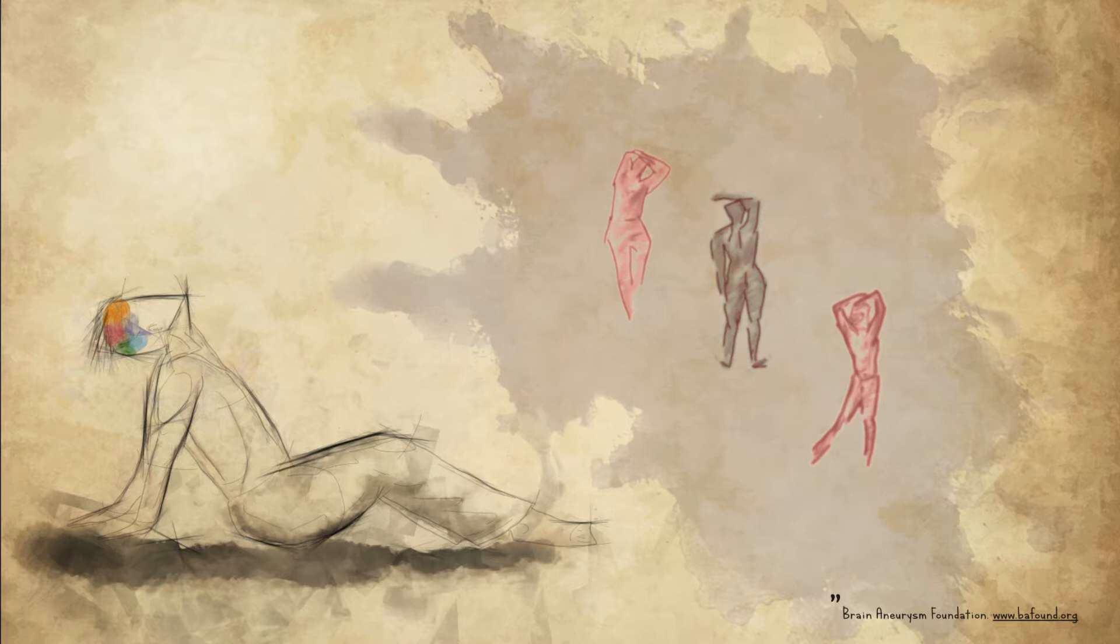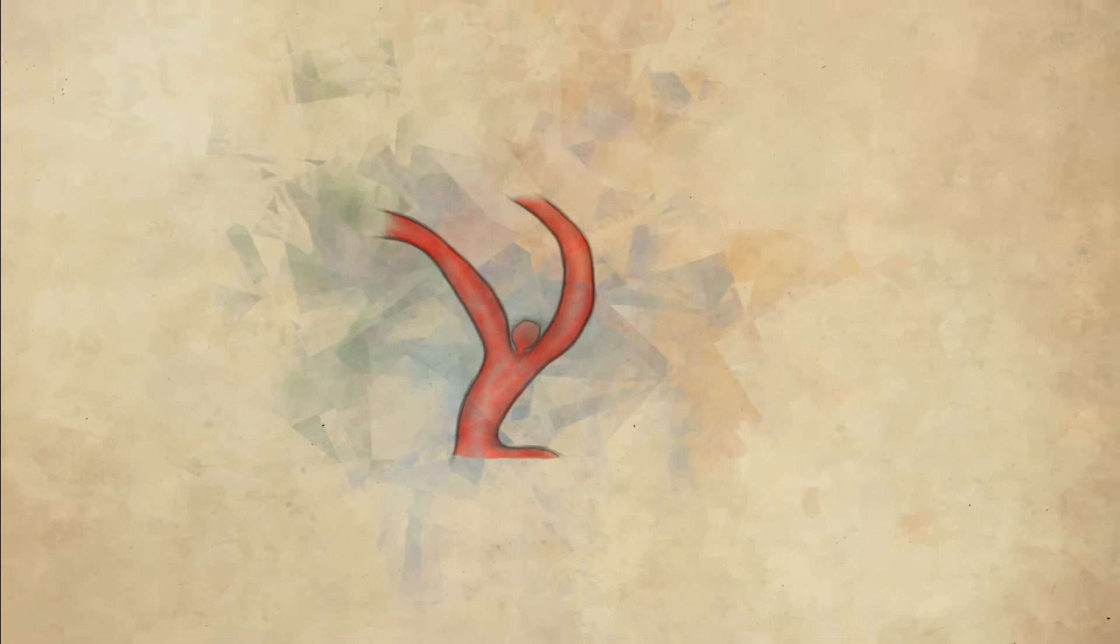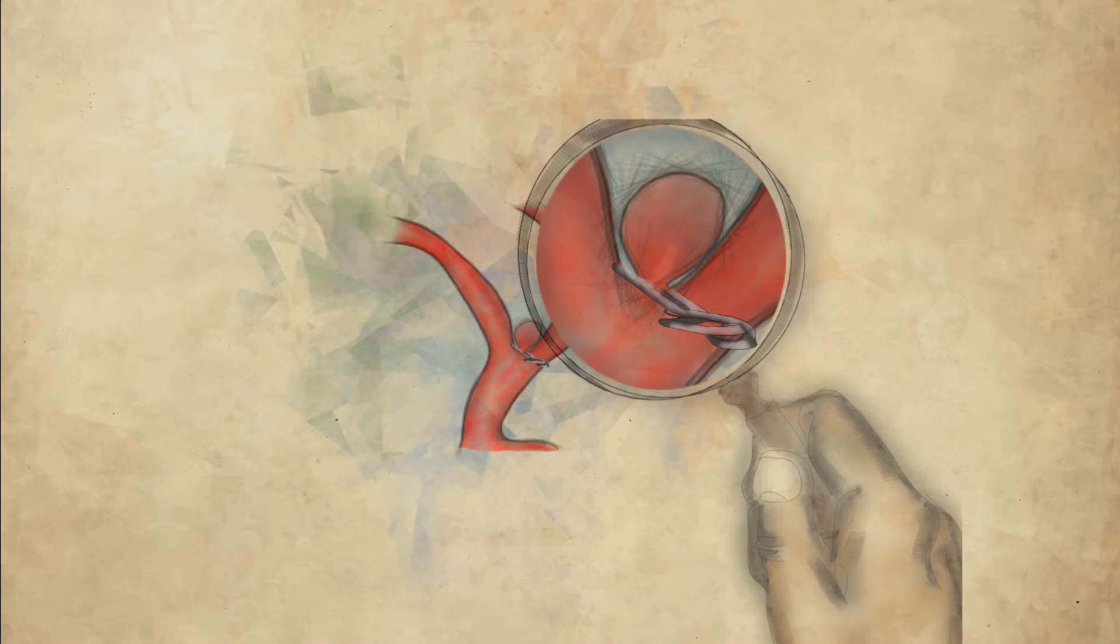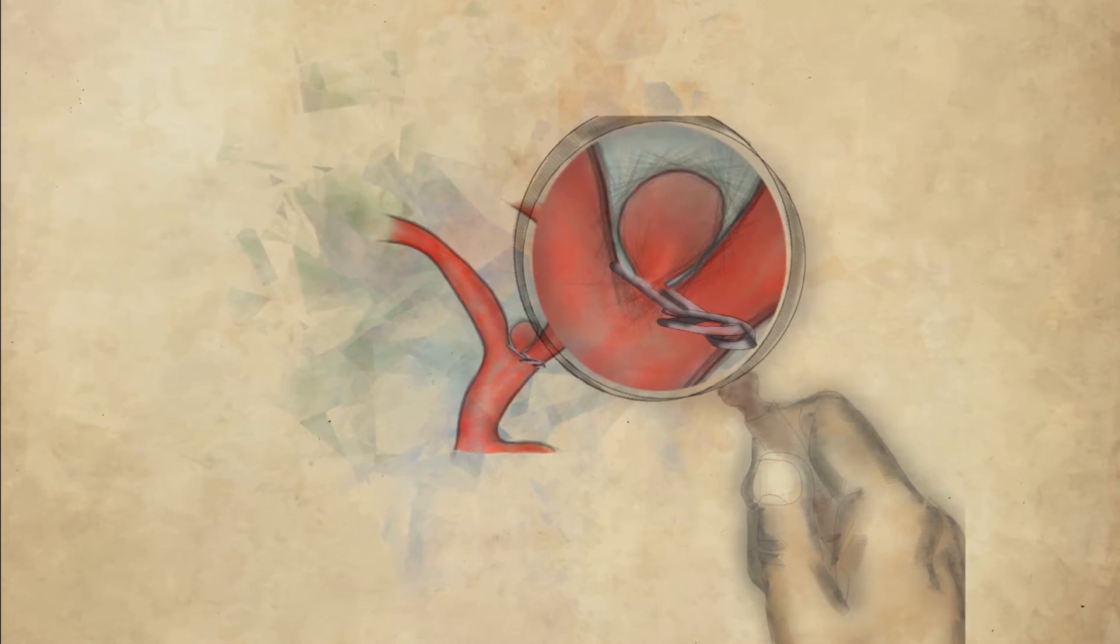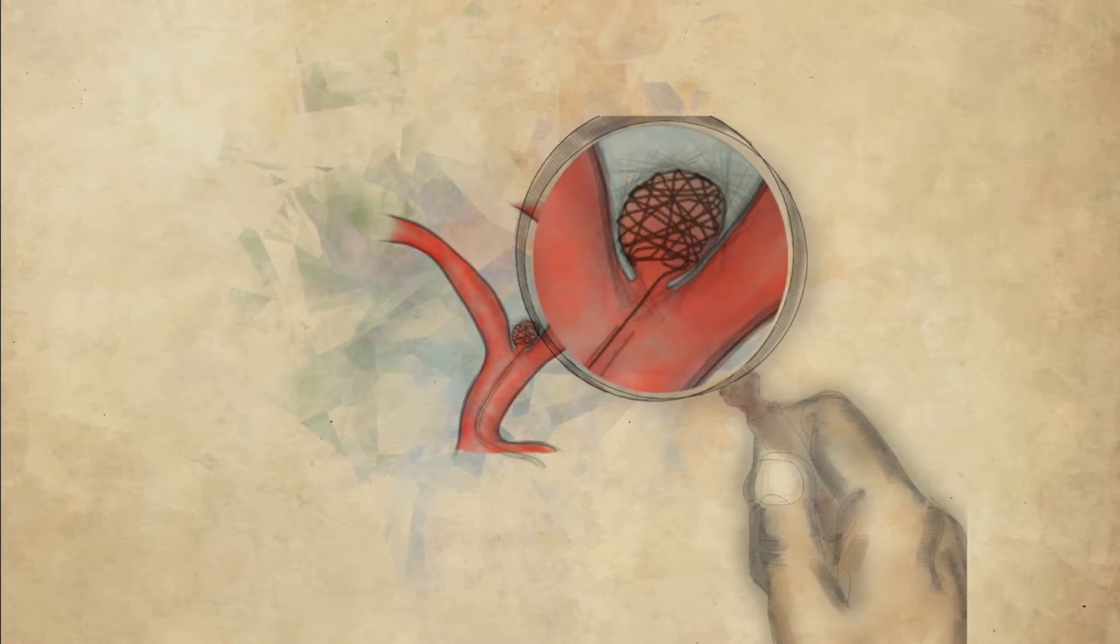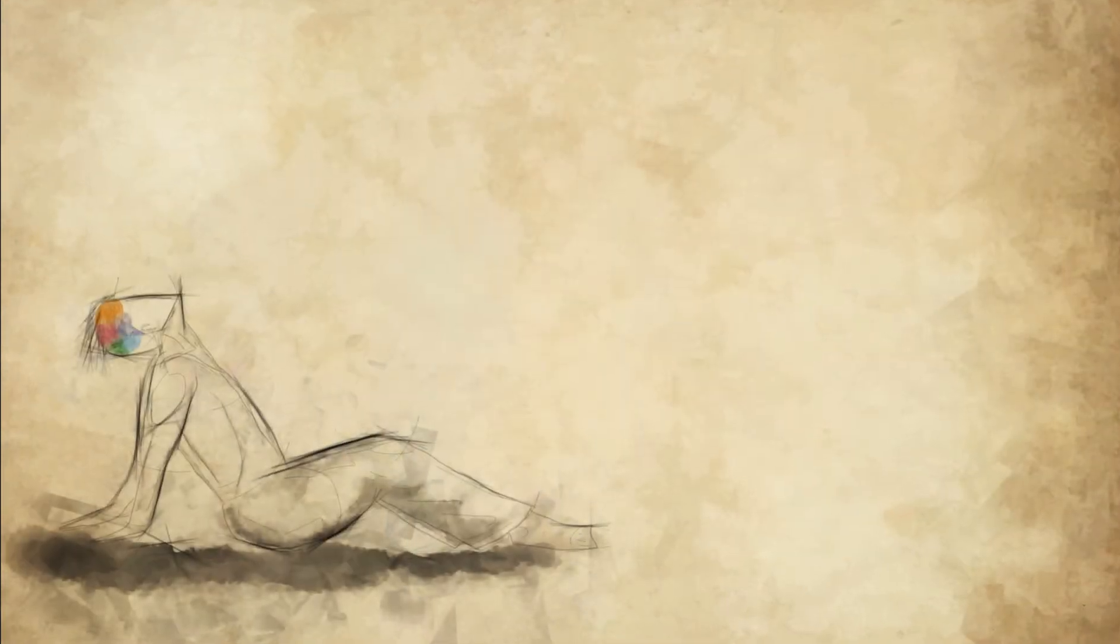When an aneurysm is discovered, several treatments are available. A clip may be placed across the aneurysm neck to prevent blood from entering the sac, though this requires invasive open skull surgery. A less invasive treatment uses coils or stents inserted through a catheter to seal the aneurysm off from the inside.